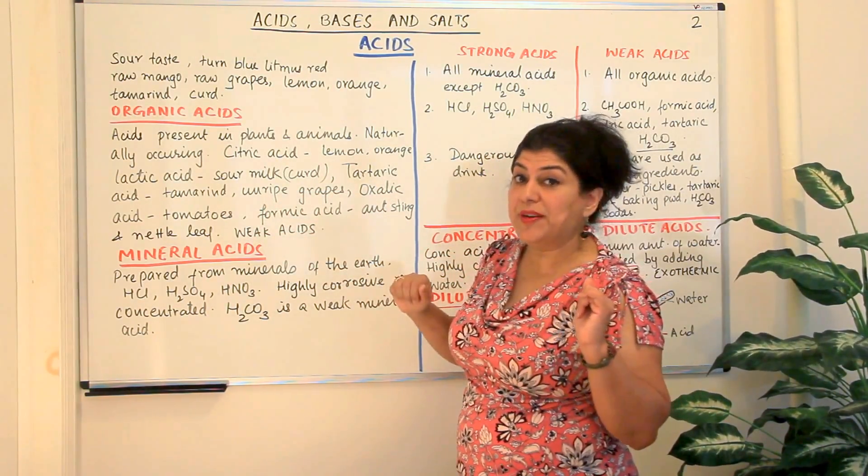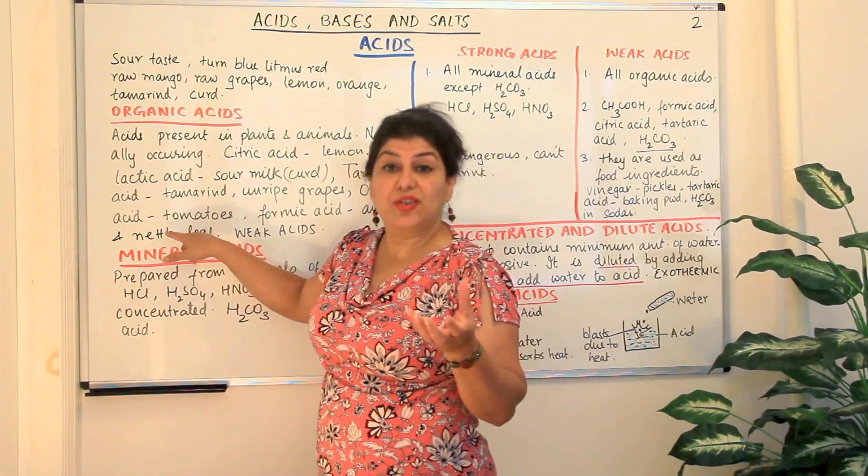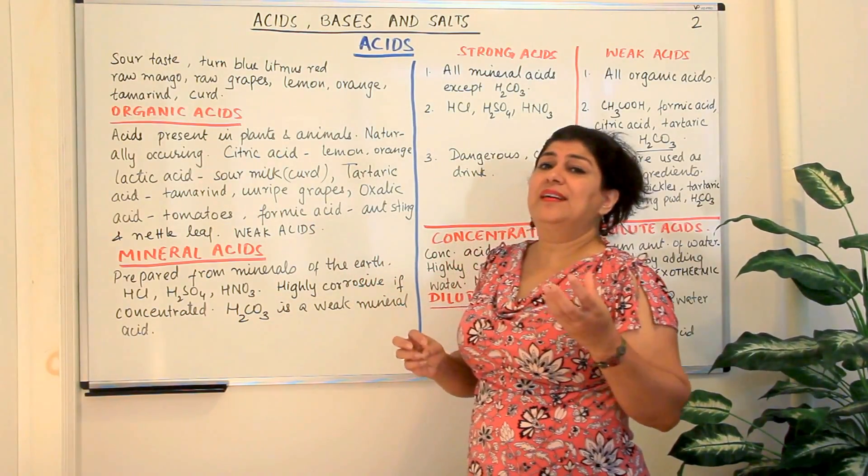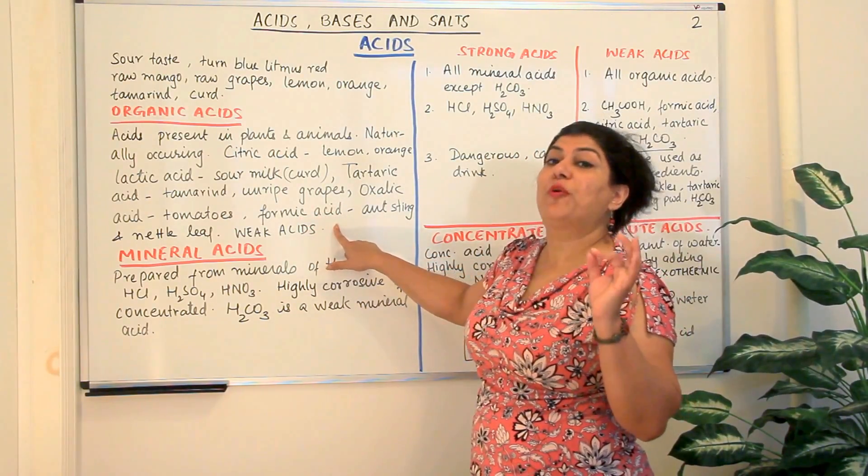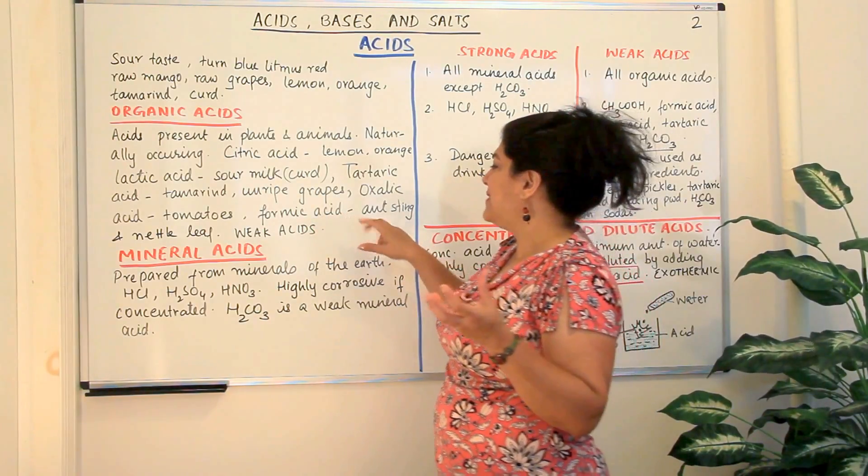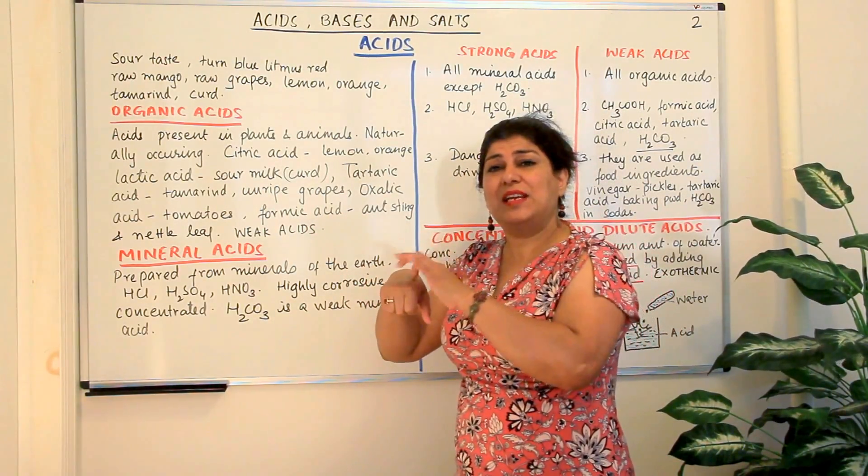Tartaric acid is an acid which is present in tamarind, it's present in unripe grapes and oxalic acid is present in tomatoes. Formic acid, formica you know is actually black ants. So formic acid, it got its name from formica, that is the black ants. The formic acid is the sting that is found in black ants, that sting that it burns.